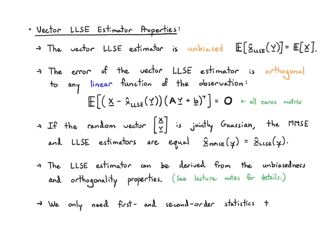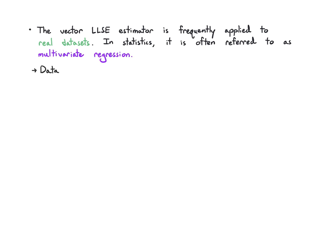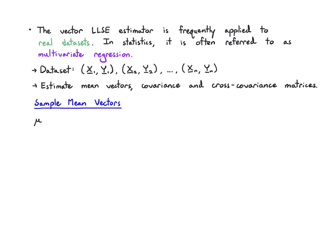In practice, the most interesting thing is we just need to collect first and second order statistics, which are pretty easy to get, and then we can form this estimator. So how does this work with real data? Usually you see this vector LLSE estimator applied in practice to real data sets, and in the context of statistics, you'll often hear it referred to as multivariate regression, or general multivariate regression. The data set is just this collection of pairs of vectors - x1 vector, y1 vector up to xn vector, yn vector - and what we need to do is estimate the mean vectors, covariance, and cross covariance matrices.